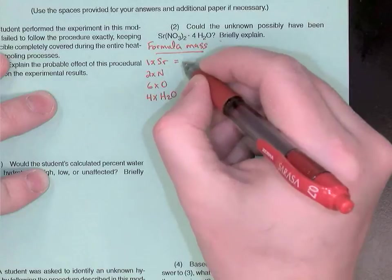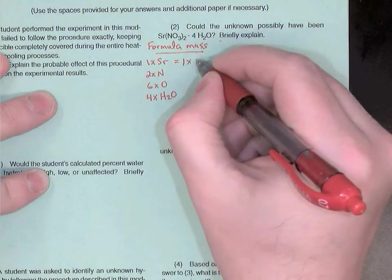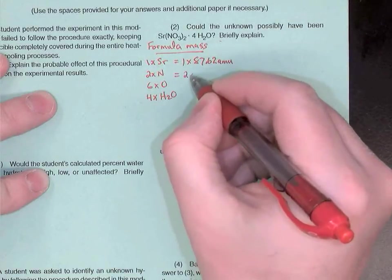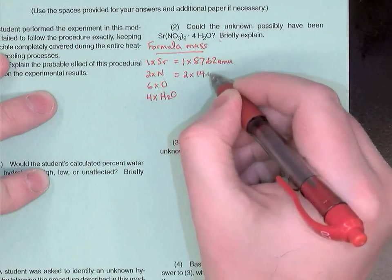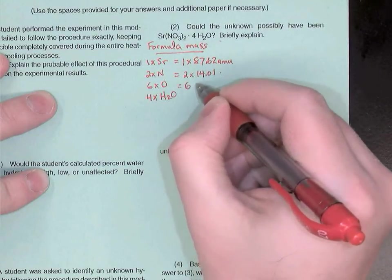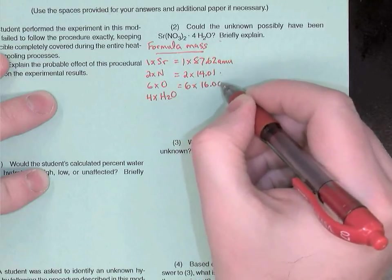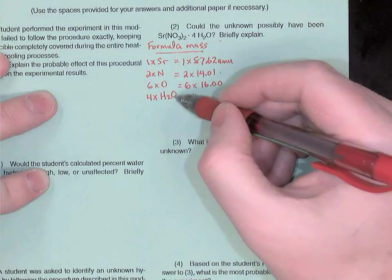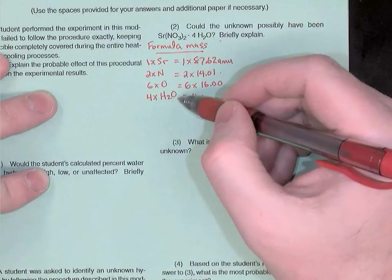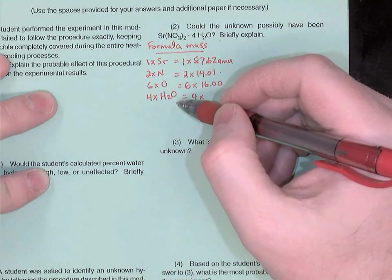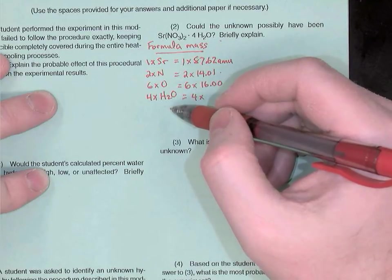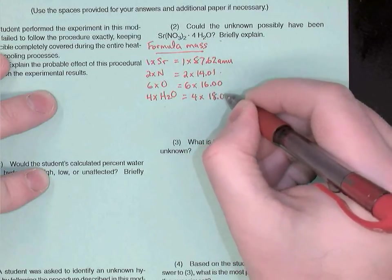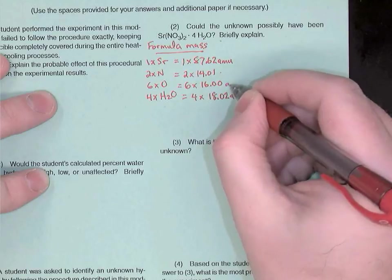So from the periodic table, one strontium would be one times 87.62 AMUs. Two nitrogens would be two times 14.01, and six oxygens, six times 16.00. Now, water, I'm going to just do a quick mental calculation. There's one oxygen and two hydrogens, so oxygen is 16.00 AMUs, and each hydrogen is 1.01 AMUs, so one oxygen with two hydrogens would be 18.02 AMUs.